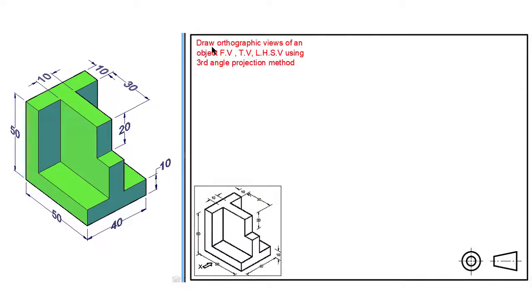So here is our data for the problem. Draw orthographic views of an object — front view, top view, and left hand side view using third angle projection method.